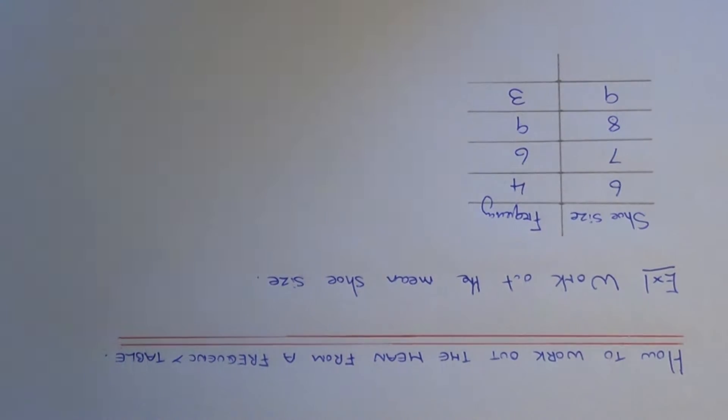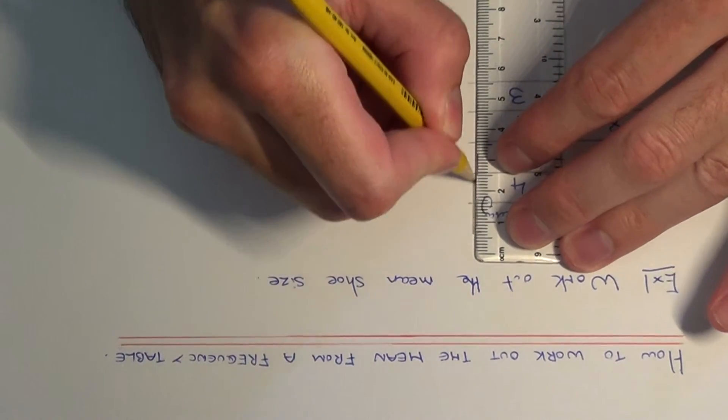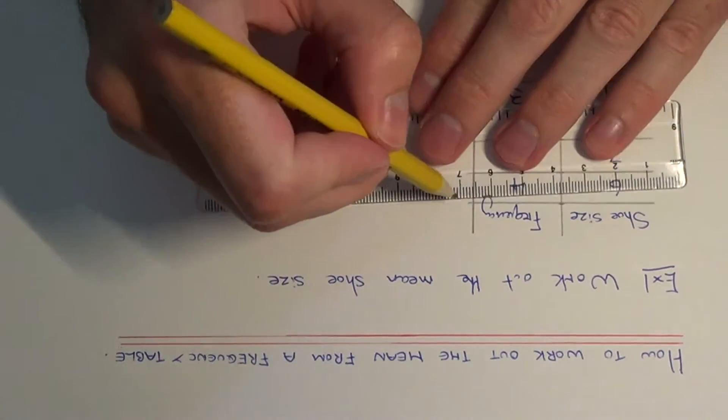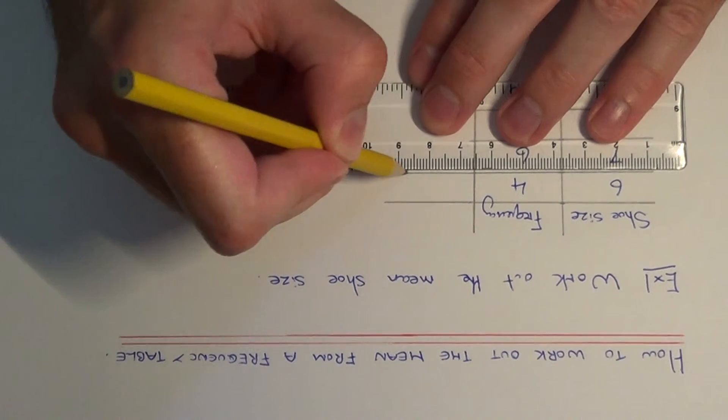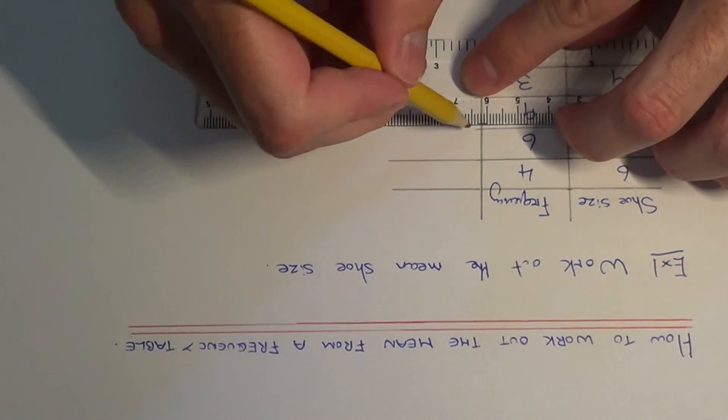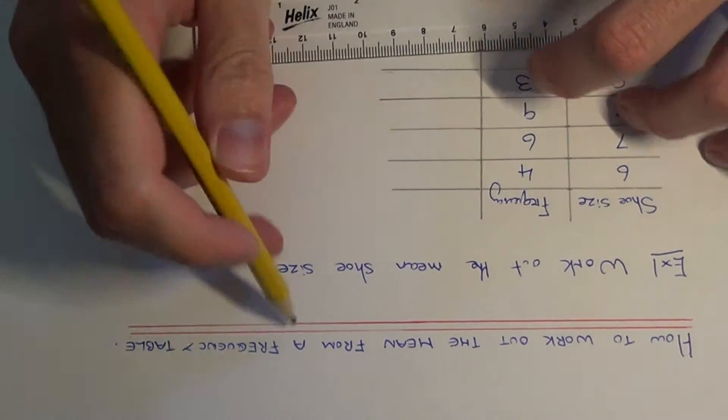So the first thing we need to do is multiply the first two columns together to give us the total shoe size. The easiest way to do this is just to add a new column. So we make a third column and we're going to multiply the shoe sizes by the frequency.